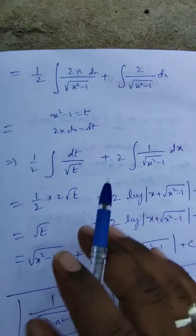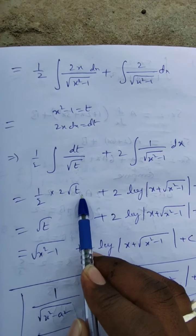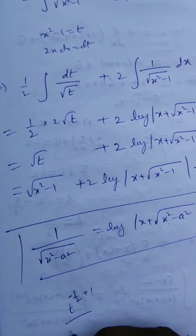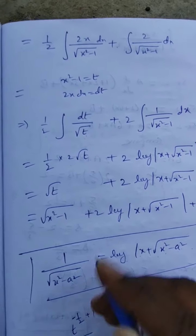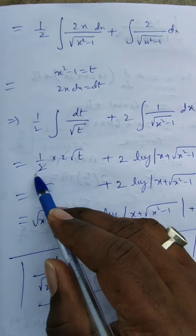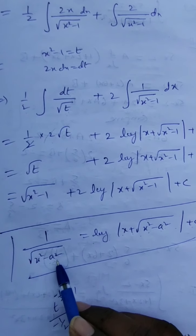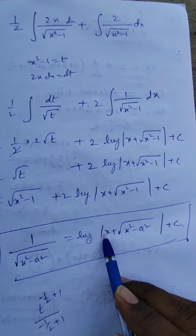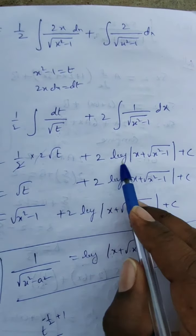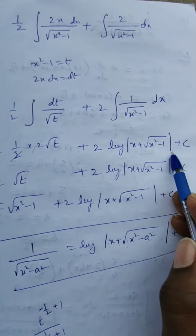Now integrating: (1/2) · ∫ t^(-1/2) dt = (1/2) · 2√t = √t. For the second part, using the formula ∫ 1/√(x² - a²) dx = log|x + √(x² - a²)| + c, we get 2 · log|x + √(x² - 1)| + c.